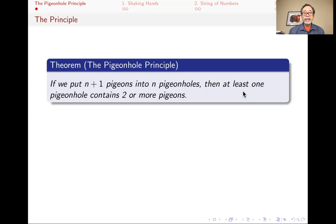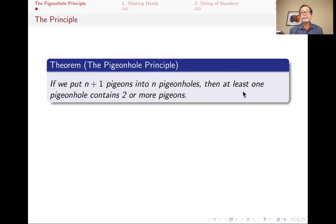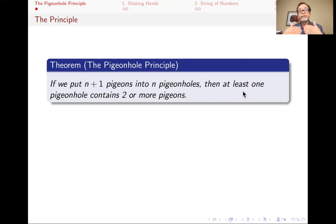We could say this in different ways. You might ask, what's a proof of that? Well, the proof is obvious, but if you wanted to write a proof, you could write it by contradiction. Assume that you had these n plus 1 pigeons and you could place them in n pigeonholes such that none of the pigeonholes had more than one pigeon. But then the most number of pigeons you would have would be 1 plus 1 plus 1 — one for each pigeonhole — which is n, but you have n plus 1 pigeons. That's a contradiction. This theorem really does not need a proof.